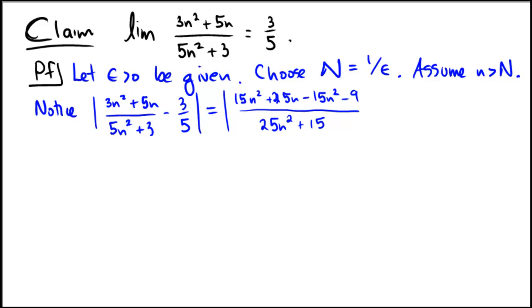Alright, so that's my numerator and my denominator, and we're smashed into one fraction. Now I got some cancellation here, I can cancel out 15n squared and 15n squared, so it looks like what we're left with is in the numerator, 25n minus 9, and in the denominator, 25n squared plus 15.